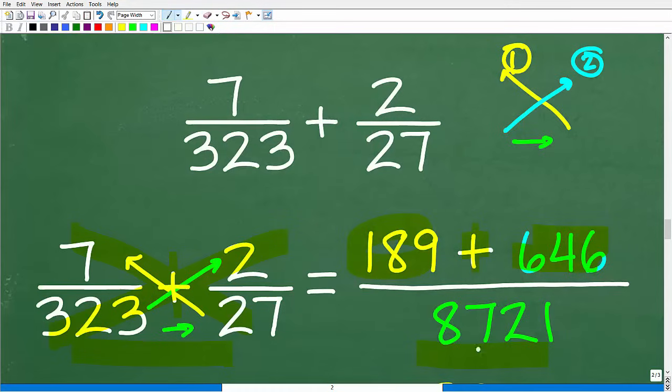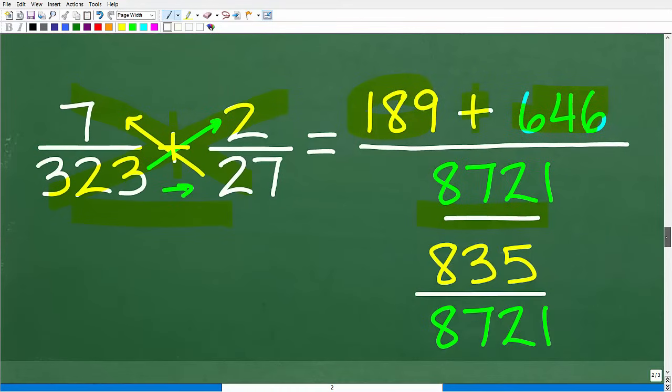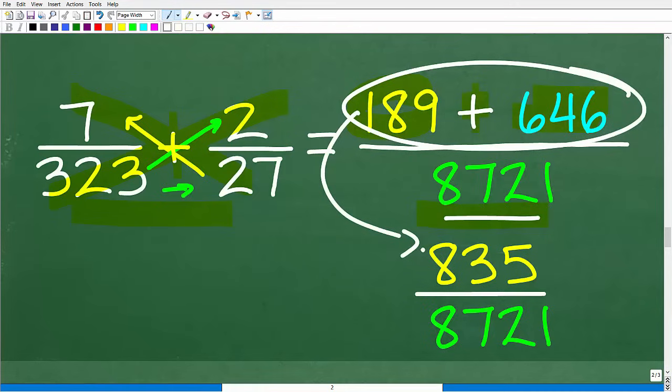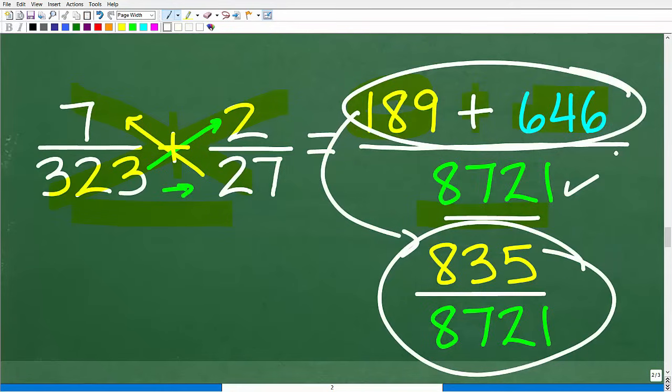So now, this 8721, this is the same denominator that we had when we were finding the LCD. So now, just simply add those numbers in the numerator. We got 835 over 8721. It's as simple as that. So in this particular case, we kind of lucked out because the denominator is, in fact, the lowest common denominator.